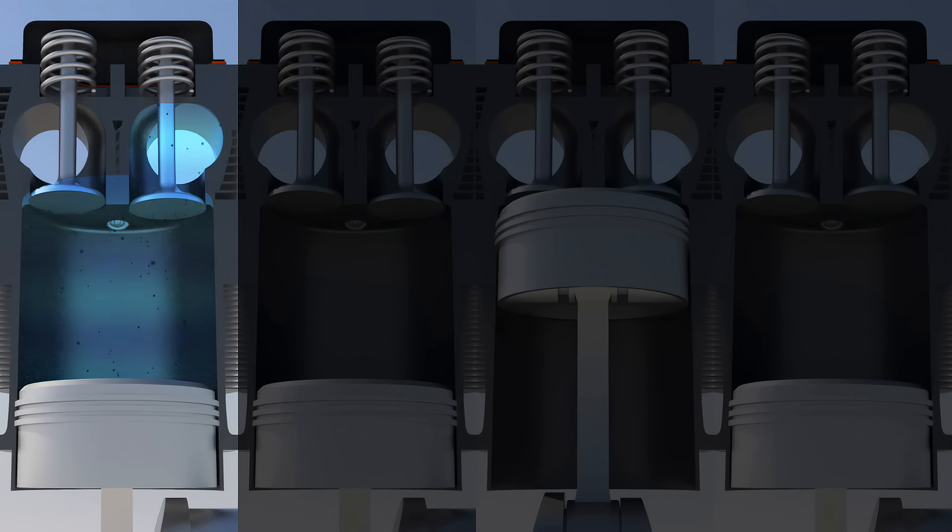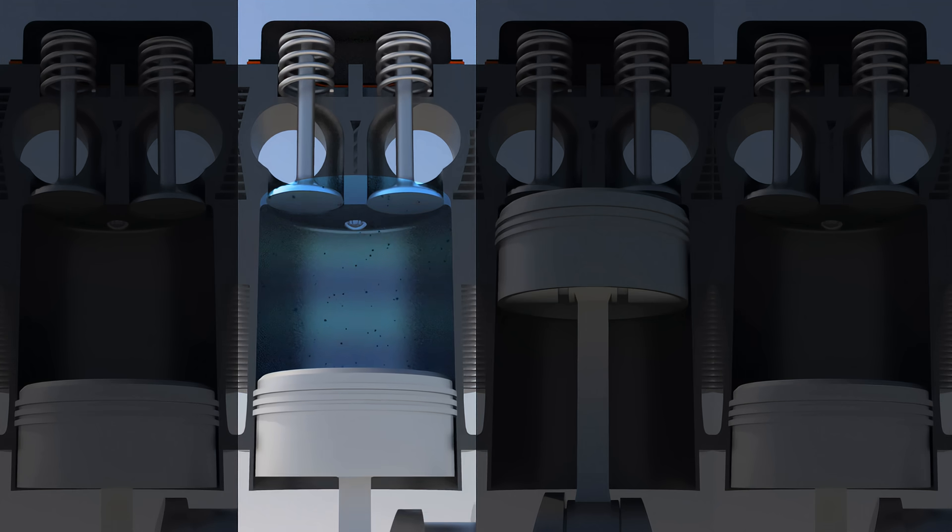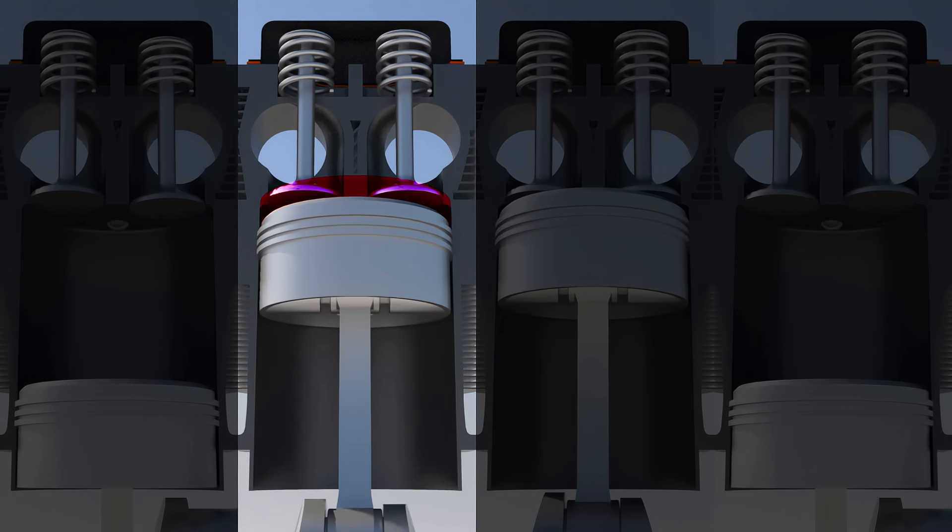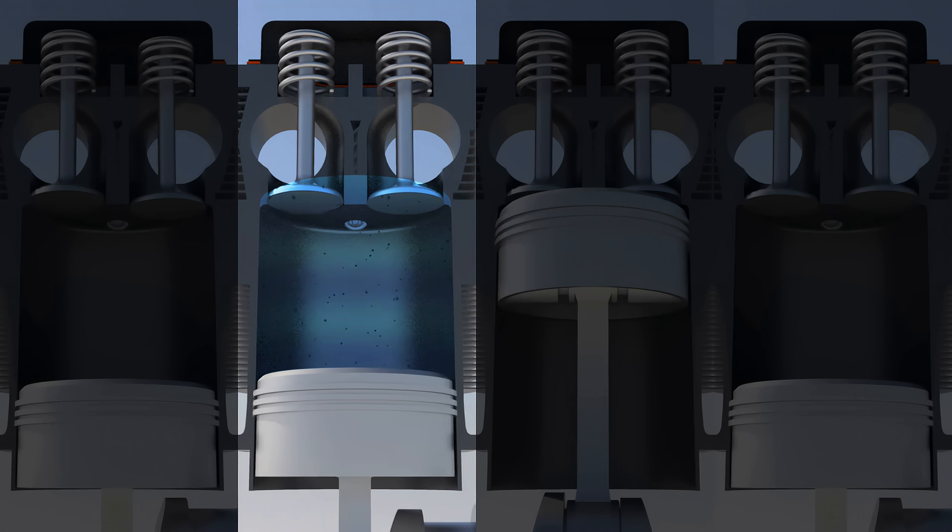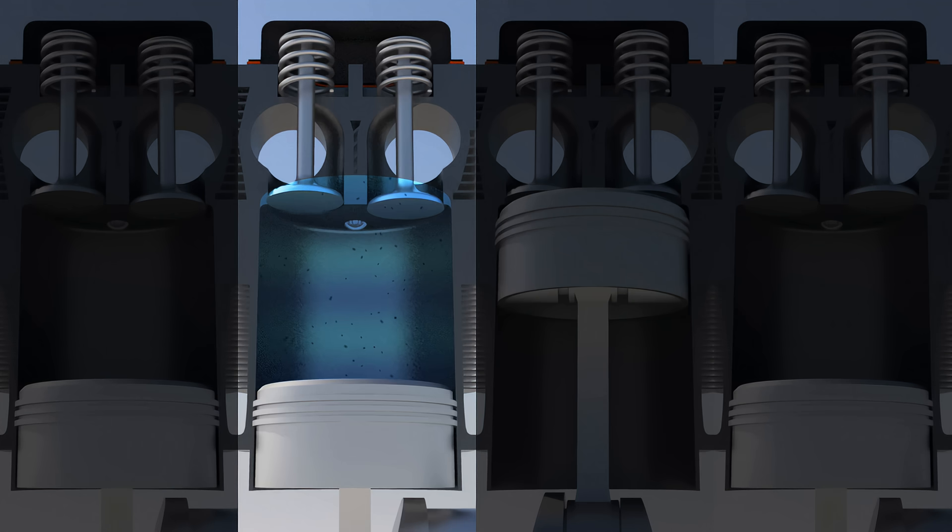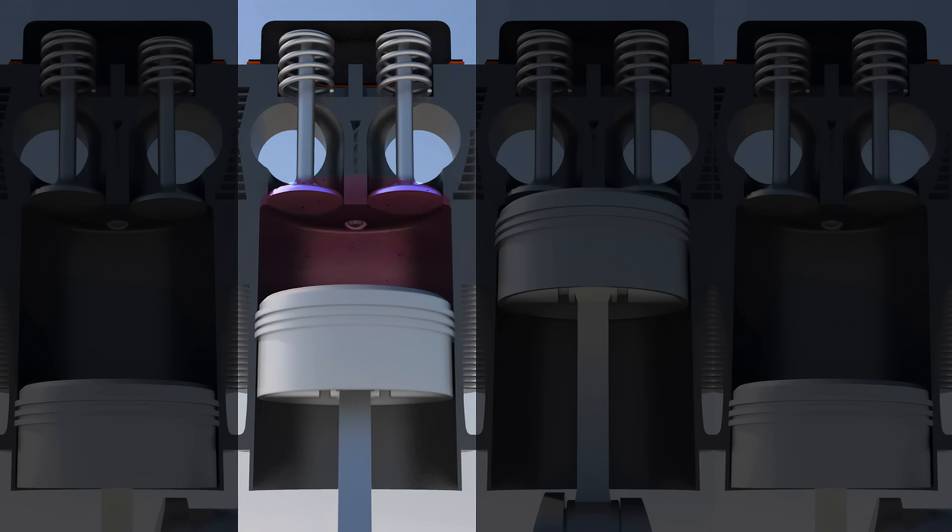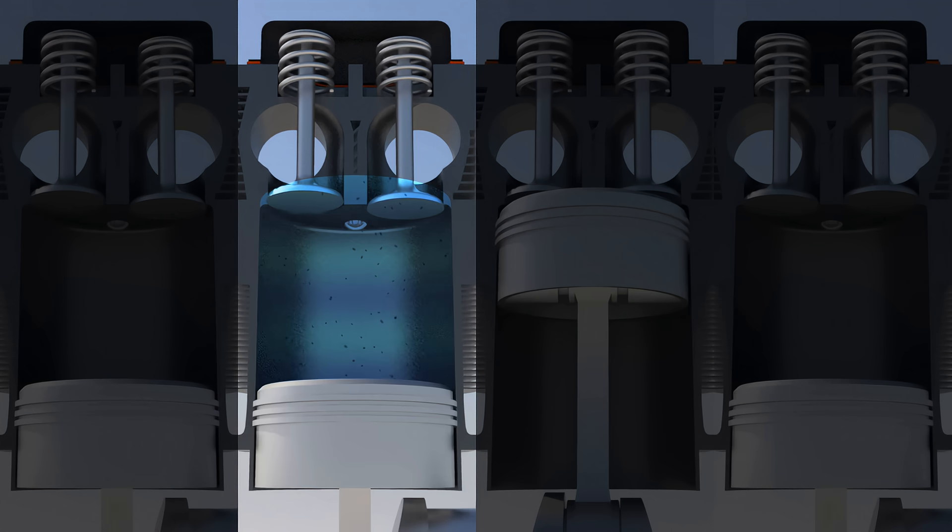Once the piston has reached the base of the cylinder, it's time for the second stroke, compression. During this phase, the intake valve is closed, and the piston reverses direction, moving back towards the cylinder head. This compresses the fuel-air mixture, since it has nowhere to escape.